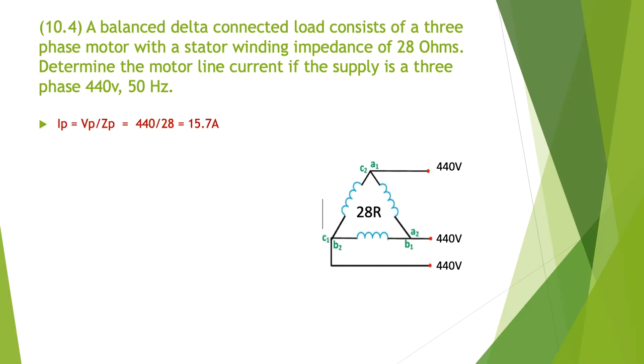So we can work out the current. It's simply I phase is going to be the volts phase divided by the Z phase. So we know what the volts phase is at 440 volts. We know what the impedance or the resistance is at 28, giving us 15.7 amps. So we know the current through any of those windings is 15.7 amps.